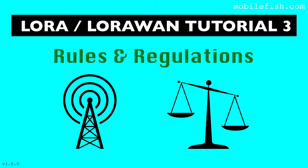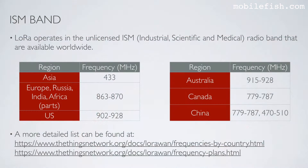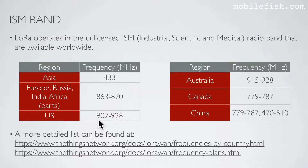In this tutorial I will explain who sets the wireless communication rules and regulations. LoRa operates in the unlicensed ISM radio band that are available worldwide. ISM stands for industrial, scientific and medical. For example, in Europe the ISM frequency band ranges from 863 to 870 MHz, and in the United States the ISM frequency band ranges from 902 MHz to 928 MHz.